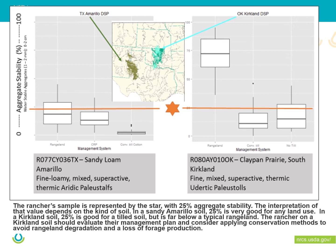DSPs can vary depending on landscape position and past land use and management. For example, two sets of projects were done — one in the Amarillo soil, part of a sandy loam ecological site, and another in Oklahoma in the Kirkland soil on a clay pan prairie. These represent very different possibilities for water stable aggregates. If a producer gets 25% water stable aggregates from a lab, that means something very different in the Amarillo soil than in the Kirkland soil — and that's not intuitive even to soil scientists.